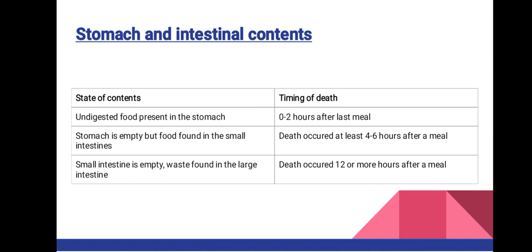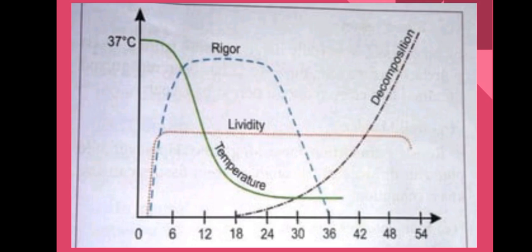Stomach and intestinal contents can also estimate post-mortem interval. If undigested food is present in the stomach, death occurred zero to two hours after the last meal. If the stomach is empty but food is found in the small intestines, death occurred at least four to six hours after a meal. If the small intestine is empty but waste is found in the large intestine, death occurred 12 or more hours after a meal.